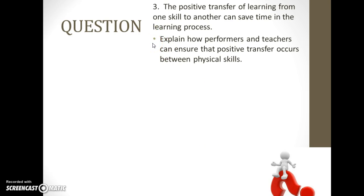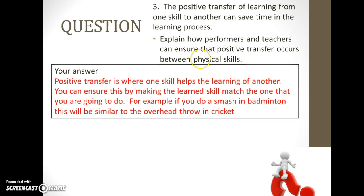This next question is a little more complex: explain how performers and teachers can ensure that positive transfer occurs between physical skills. What strategies would a teacher or coach use to make sure transfer from one skill to another takes place? Pause the screencast and have a go. One possible answer: positive transfer is where one skill helps the learning of another; you can ensure this by making the learned skill match the one you're going to do — for example, a smash in badminton is similar to an overhead throw in cricket. That answer is acceptable, but we can go with better answers to guarantee marks.